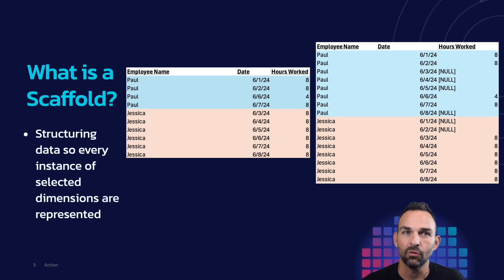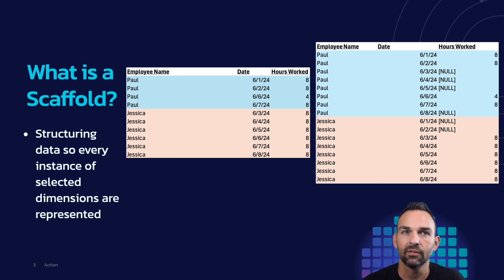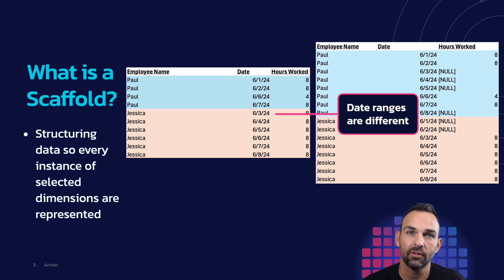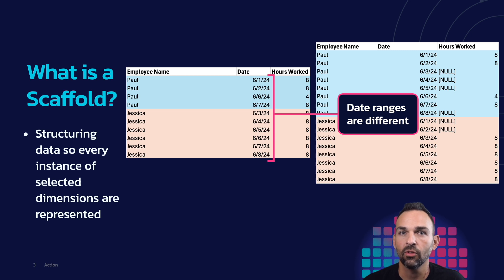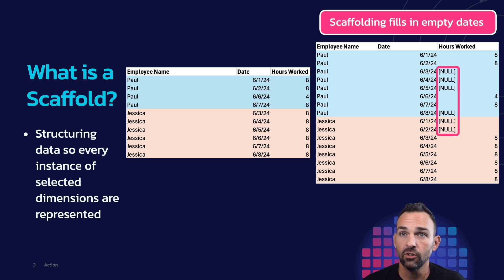So the question is, what is a scaffold? Scaffolding is structuring data so every instance of selected dimensions are represented. Here we have two dimensions, employee name and date, as well as a measure for hours worked. Paul and Jessica are employees, but they did not work the same dates. Paul worked June 1st, 2nd, 6th, and 7th, and Jessica worked the 3rd through the 8th, so there is going to be some missing data. Through the act of scaffolding, we can see that all dates are represented for the employees, resulting in null values, but the underlying data is there for us to work with in Tableau.